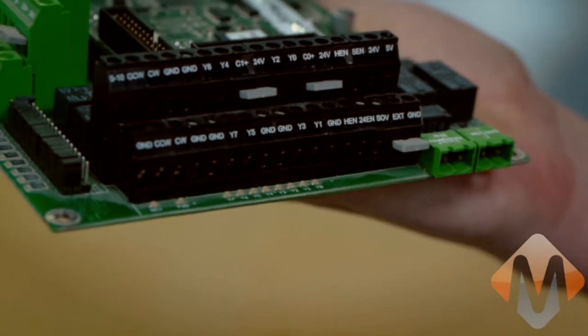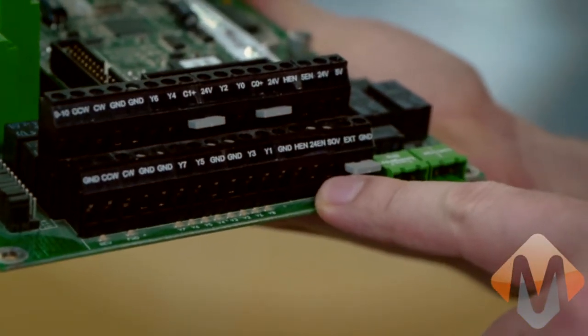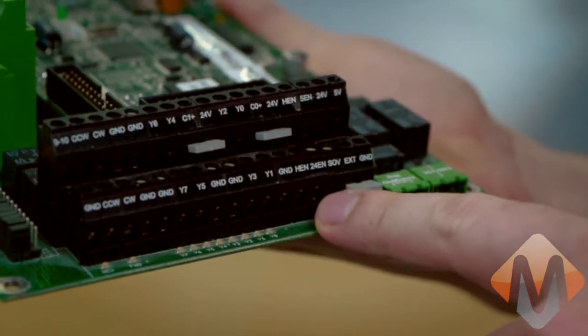This is the Mach Motion Apollo 3 breakout board, and we have the 24EN signal coming here. This is a 24 volt enable signal.